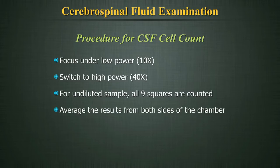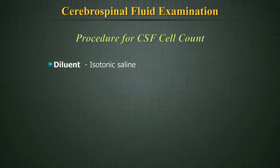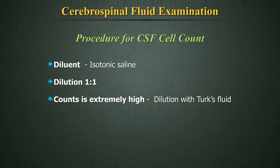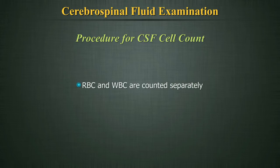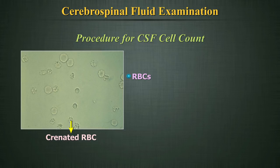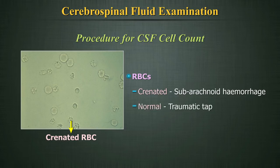The necessity to dilute the CSF and the number of squares counted depends upon the cellularity of the specimen; adjustments should be made accordingly. Both WBCs and RBCs should be counted. If a diluent is required, isotonic saline may be used as it preserves both WBCs and RBCs. A 1:1 dilution is usually adequate. If counts are extremely high for WBCs, dilution with Turk's fluid can also be done. RBCs and WBCs are counted separately. Care must be taken to check if the RBCs are crenated or not — in subarachnoid hemorrhage, crenated cells are seen as opposed to normal-looking red cells in a traumatic tap.